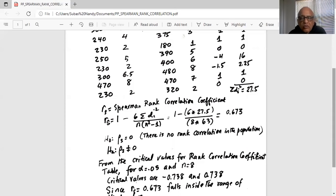Now we want to test the null hypothesis rho S. Rho is a Greek symbol, it is the population correlation coefficient equal to 0. That is, there is no rank correlation in the population. The alternate is rho S not equal to 0.